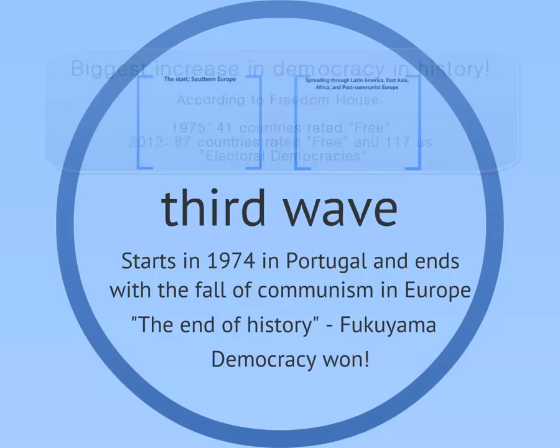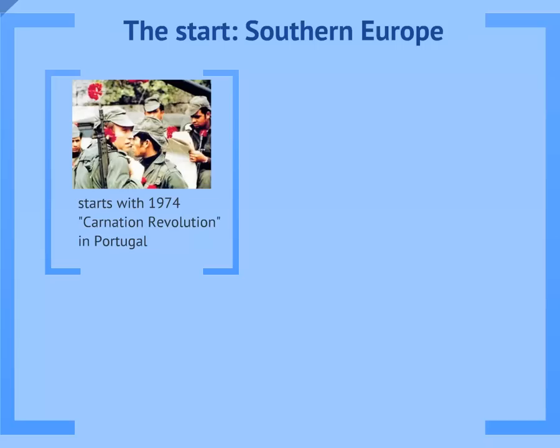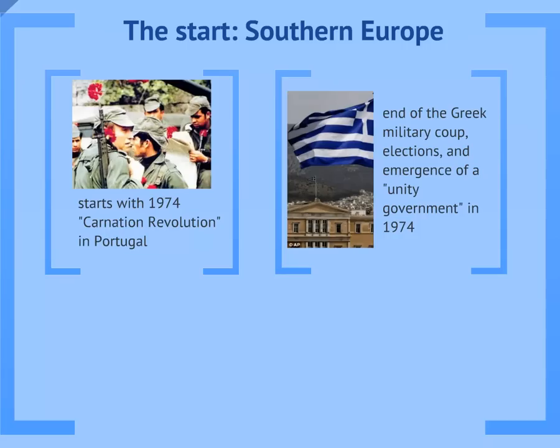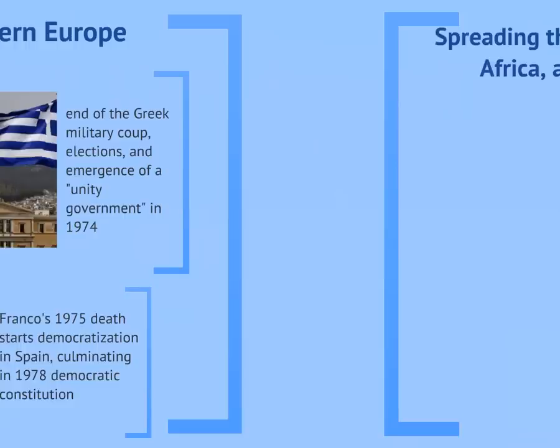The third wave is a long wave that started in southern Europe with the end of a few military dictatorships. In Portugal, a popular uprising led to the Carnation Revolution and the establishment of a democratic regime. In Greece, infighting among the generals led to the end of that country's military dictatorship and the eventual establishment of modern Greek democracy. Finally, Spain's longtime dictator, Francisco Franco, died in 1975 and the Spanish monarchy helped guide the country towards democracy, culminating with the country's 1978 democratic constitution.